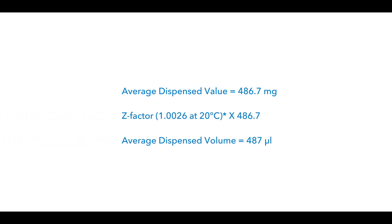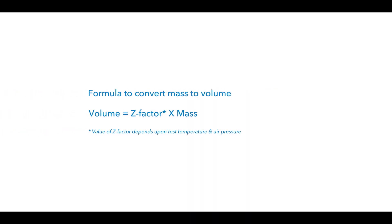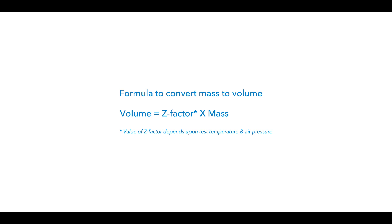Multiply the obtained average weight by the z-factor to obtain the average dispensed volume. The formula to convert mass to volume is: Volume equals z-factor times mass.